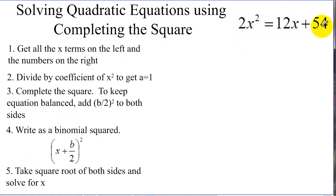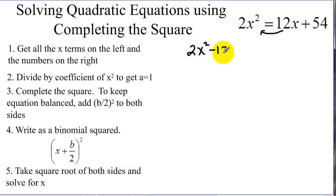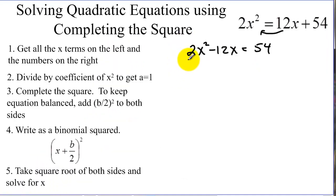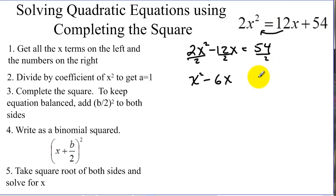We're going to solve this quadratic by completing the square. This one might be factorable, but we're going to use this method. For this method, we want all the terms with x's on one side of the equation and numbers on the other. So we're going to move the 12x to the other side by subtracting, giving us 2x squared minus 12x equals 54. In our pattern for completing the square, our a value must always be 1, so we are going to divide every term on both sides by 2. Now we have x squared minus 6x equals 27.